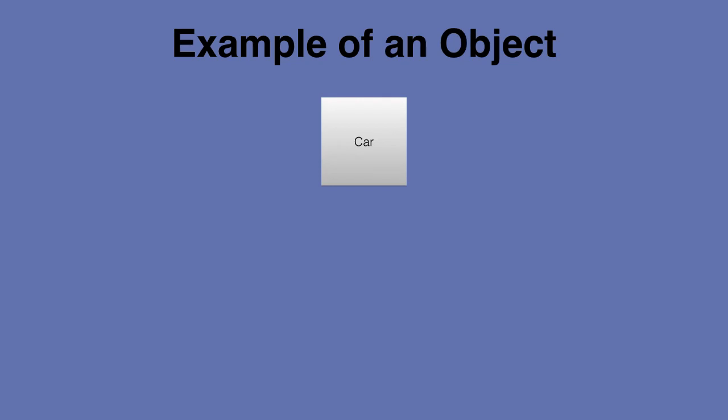For this car, and now keep in mind that the objects in programming are very similar to the objects that we have outside, on the real world. So for this car object, we are going to define some properties, let's say, and methods.